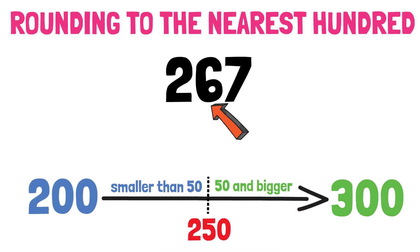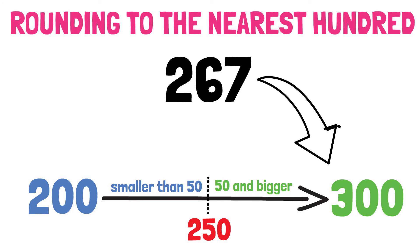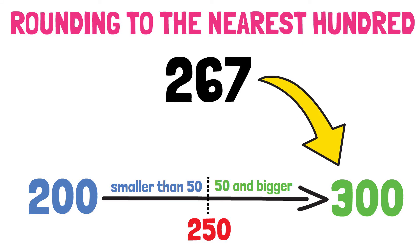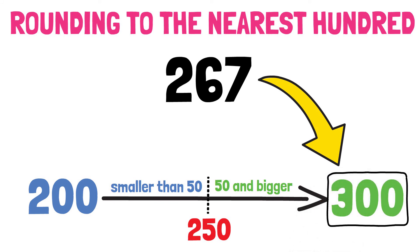The value of the tens is 60. Which side does 60 belong to? Yes, correct. It is bigger than 50, so it belongs to the right side. The hundreds number on the right is 300. So when we round 267 to the nearest hundred, we get 300. Fantastic!